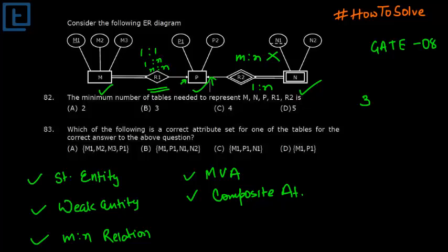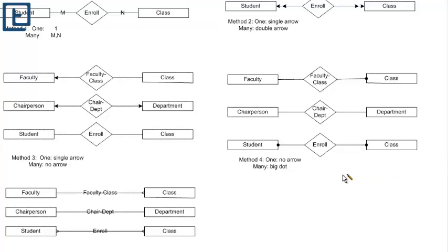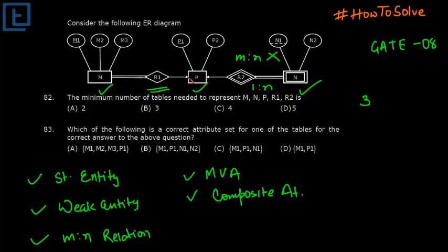After searching over the internet, I found out a useful link, and I will share with you all. If you see here, we have various representation of the cardinality. If you see this is method 3, and 1 means single arrow and many means no arrow. Whenever we have the side which has this single arrow is 1 side, and this one is many side. So one faculty attends many classes. Similarly, this concept we will apply here in this problem.